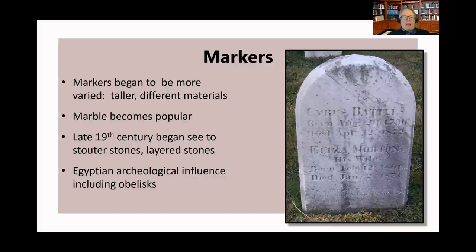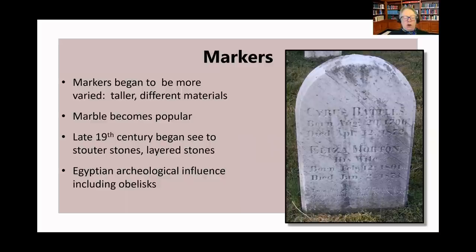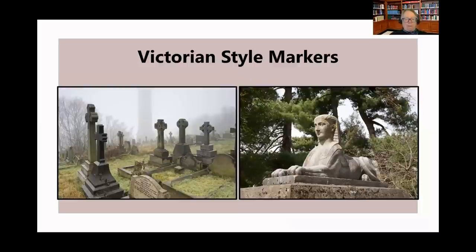During the 19th century markers continued to evolve — they became taller, more varied, and used different materials. As methods of transporting stone improved, heavy marble became a popular material. By the end of the century two notable trends occurred: first, the stones became stouter and began to be layered one on top of the other; and second, a number of markers began to imitate Egyptian funeral symbols. The late 1800s had seen archaeological expeditions to the Nile River and the uncovering of amazing treasures in the tombs of the ancient pharaohs.